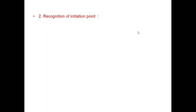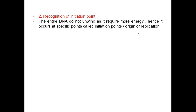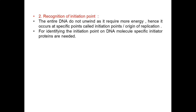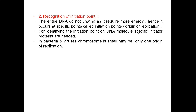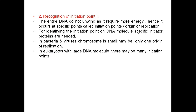The second step is recognition of the initiation point for DNA replication. The entire DNA does not unwind as it would require more energy, so replication occurs at specific points called initiation points or origins of replication. Specific initiator proteins are needed to identify these points. In bacteria and viruses, there may be only one origin of replication, whereas in eukaryotes with large DNA molecules, there may be many initiation points.